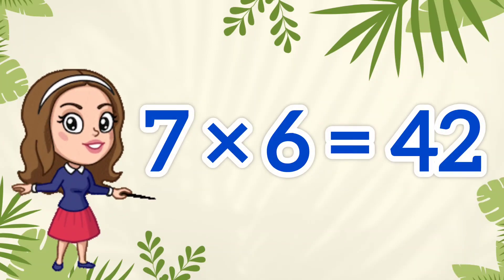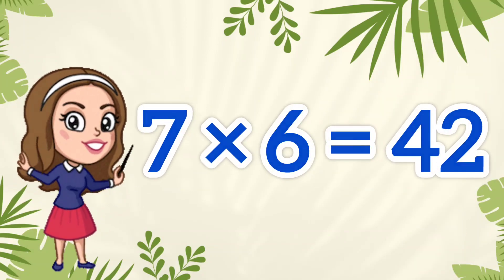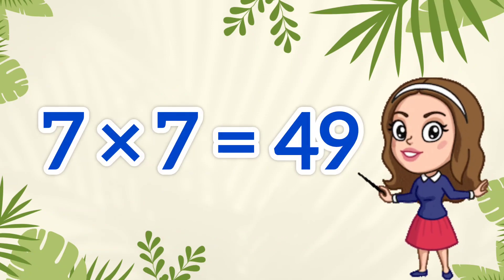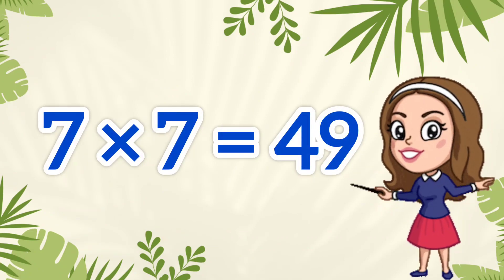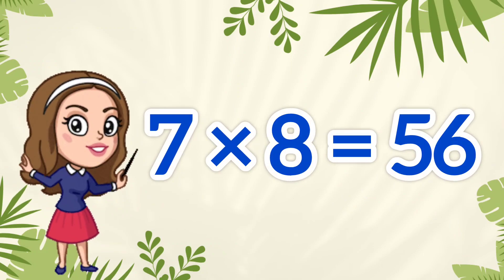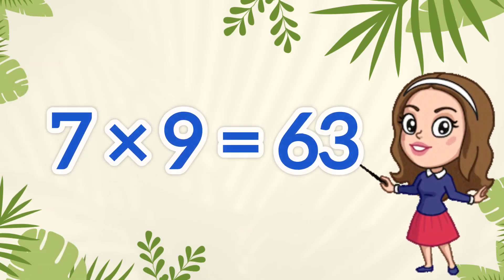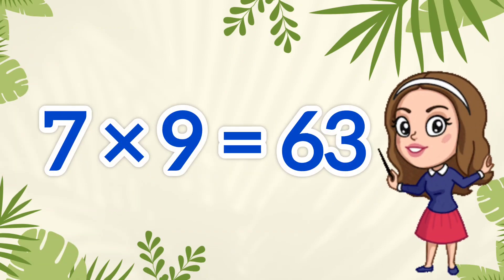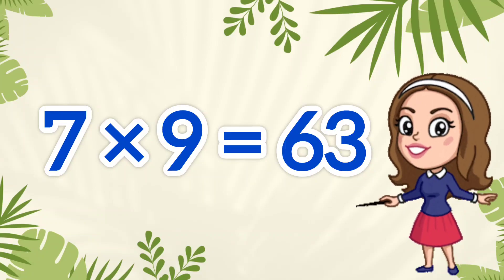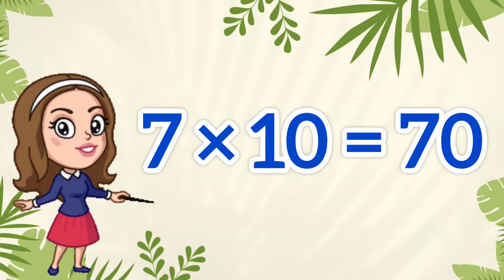Seven sixes are forty-two. Seven sevens are forty-nine. Seven eights are fifty-six. Seven nines are sixty-three. Seven tens are seventy.